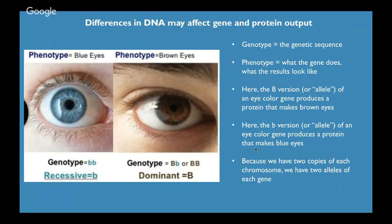Moving into talking about how these things are inherited: we have two copies of each chromosome, so we have two versions — called alleles — of each gene. Say your mom had the capital B version and your dad had the lowercase b version, then you might have a genotype of big B and little b. Brown eyes are dominant, so you end up with brown eyes even if you have a little b version. This is the concept of dominant and recessive alleles.